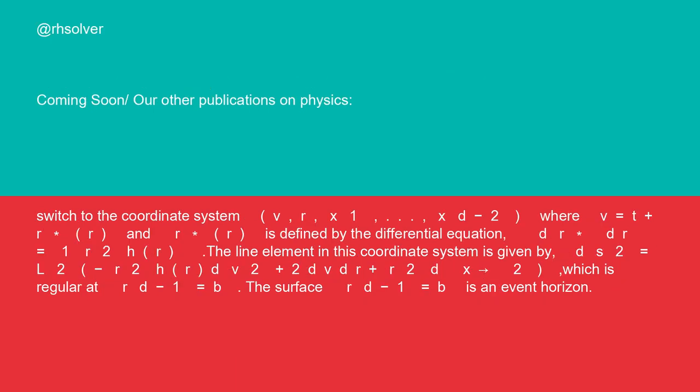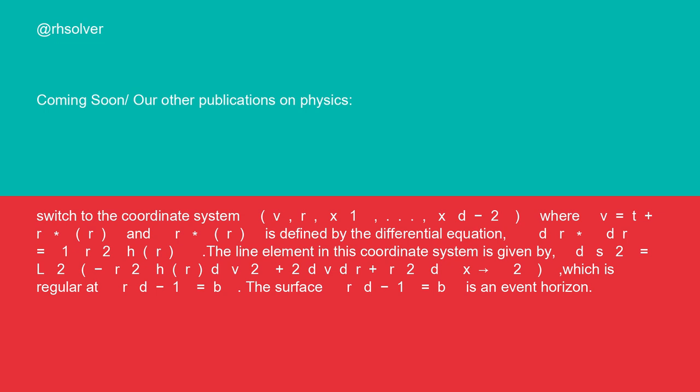we switch to the coordinate system (v, r, x_1, ... x_{d-2}) where v = t + r*(r) and r*(r) is defined by the differential equation dr*/dr = 1/(r² h(r)).